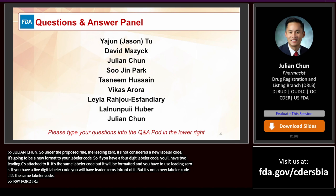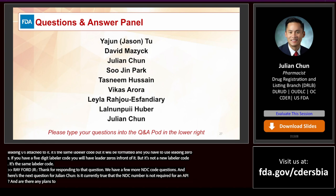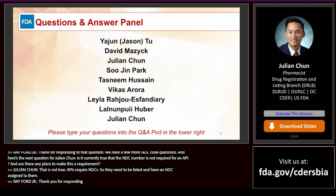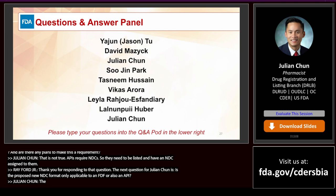Question: Is it true that the NDC number is not required for an API? That is not true — APIs require NDCs and need to be listed with an NDC assigned to them. Question: Is the proposed new NDC format only applicable to FDFs or also to APIs? The proposed rule applies to all NDCs — for FDFs and for APIs.